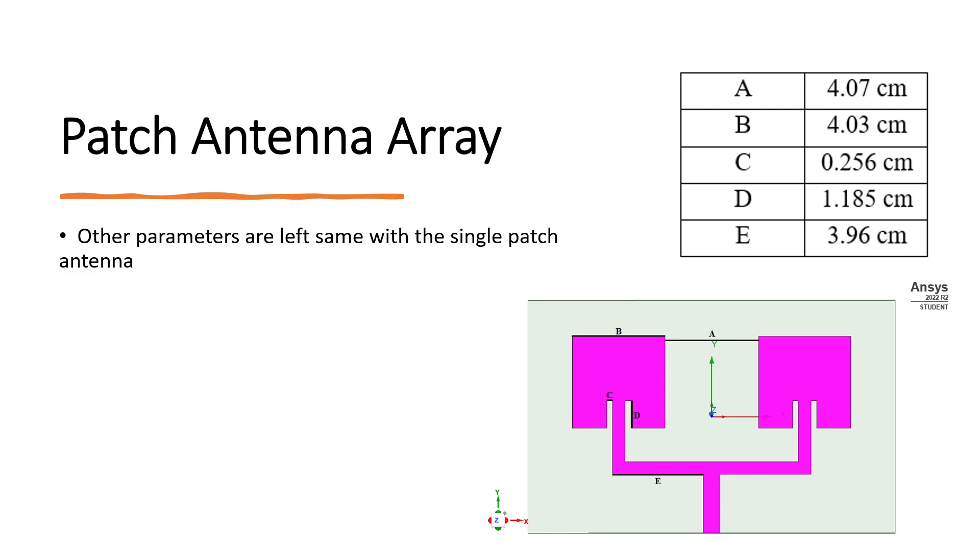Ungiven values are the same as the single patch antenna. Here I should note that the separation distance is around 8 cm, and I used the single port feeding method.